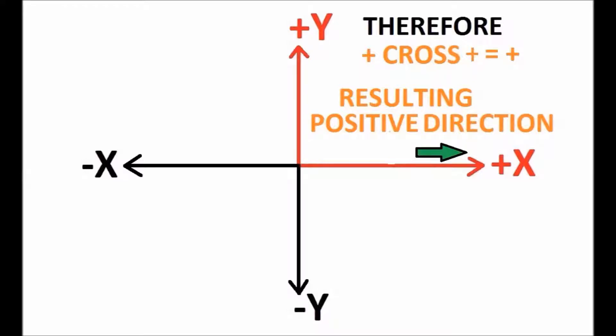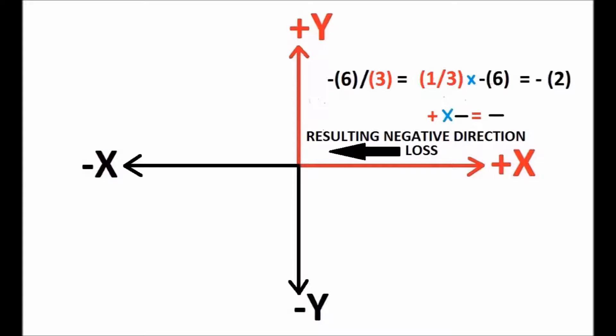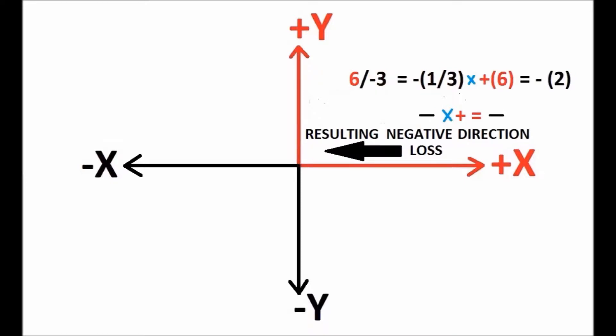Similarly, you can realize the above concept with division operators. The same results are arrived at. As an example, minus six divided by three means one third of loss six results — we are in the loss direction. Six divided by minus three means one third of loss on gain six results — we are still in the loss direction.